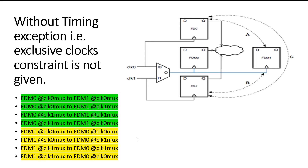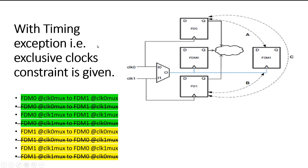Now let us consider the other case when the timing exception is given — clock zero mux and clock one mux are declared as physically exclusive clocks. These four struck-out paths will not be taken care of by the PNR tool and timing analyzer tool. For paths where FDM0 is at clock zero mux and FDM1 is at clock one mux — these two clocks cannot exist together, so these are invalid paths and the PNR tool will not take care of them. Similarly, FDM0 at clock one mux to FDM1 at clock zero mux — these two clocks cannot coexist, so these are also invalid paths and the PNR tool will ignore them.